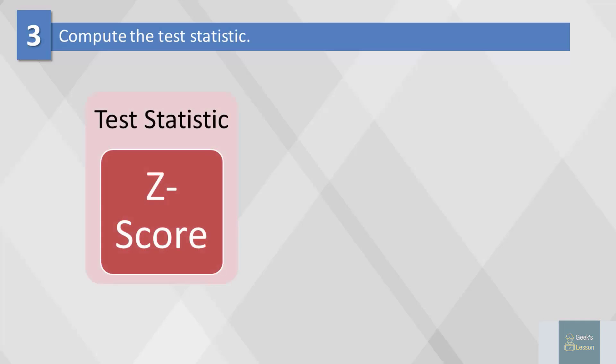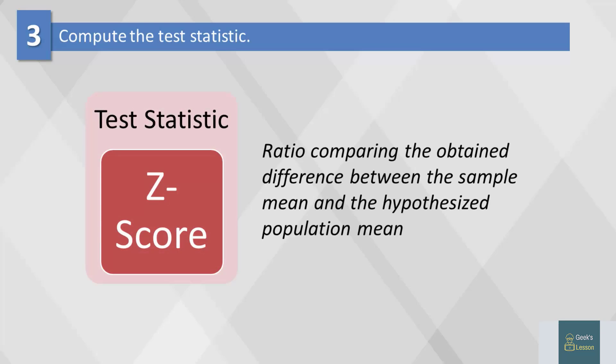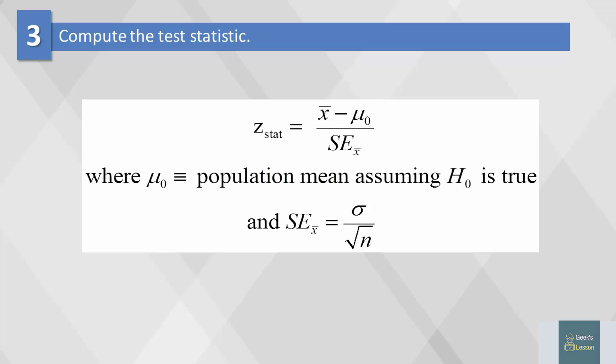Here we will use the z-score, which is a ratio comparing the obtained difference between the sample mean and the hypothesized population mean. This is an example of a one-sample test of a mean when the standard deviation sigma is known.